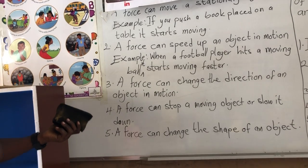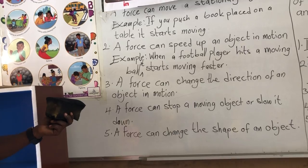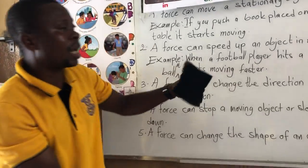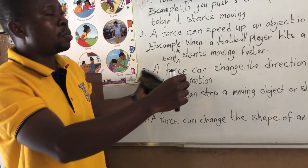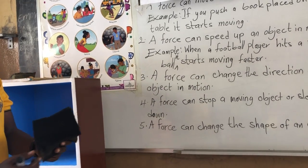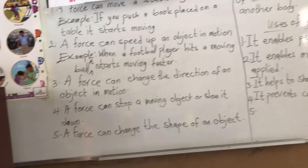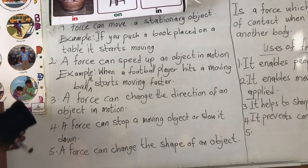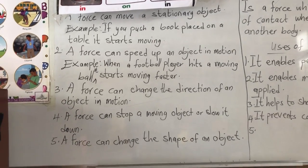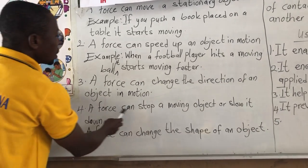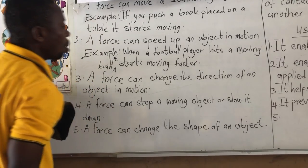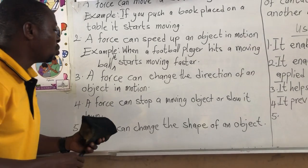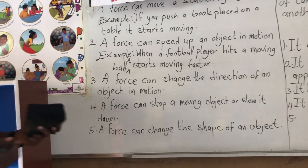At the same time, you can be riding on a bicycle and hit something, and you can see that it veers — the bicycle will not go straight in the direction in which you are moving. Number four: a force can stop a moving object or slow it down.